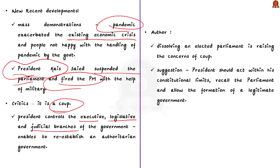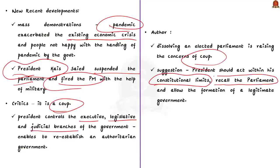The author of the editorial agrees with critics, seeing this event as a coup and believing Tunisia is again establishing authoritarian government. The author suggests that the president should act within his constitutional limits, recall parliament, and allow formation of a legitimate government. Tunisia successfully transitioned from dictatorship to parliamentary democracy, but recent events are reversing this transition. Only by following these suggestions will Tunisia remain a democracy.